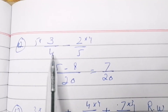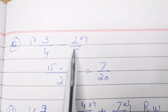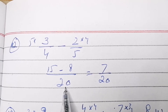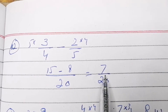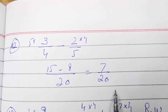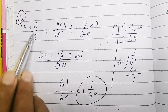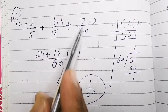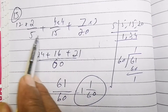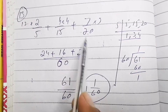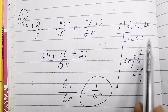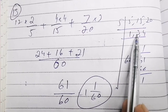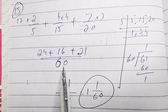Question 12 is about subtraction: 3 over 4 minus 2 over 5. The LCM of 4 and 5 is 20, and the answer is 7 over 20. Question 13: 2 over 5 plus 4 over 15 plus 7 over 20 — three proper fractions are given. We take the LCM of 5, 15, and 20.